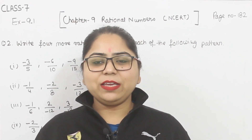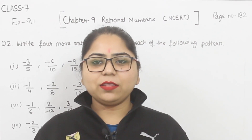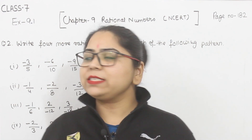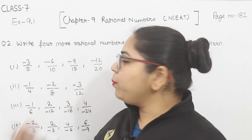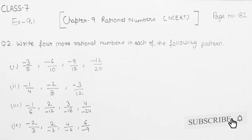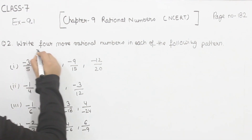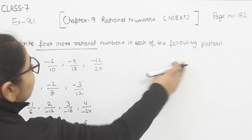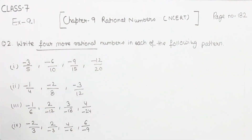Hello everyone, this is Preeti. We are here with another question of Exercise 9.1, page number 182, question number 2: Write 4 more rational numbers in each of the following patterns. These are the 4 parts given to us, and we have to write according to the pattern.